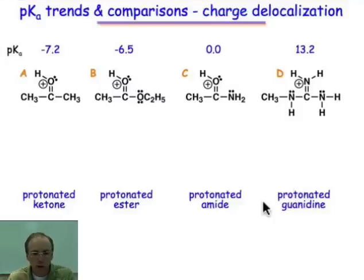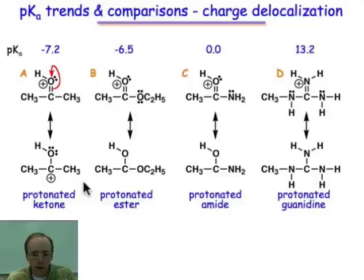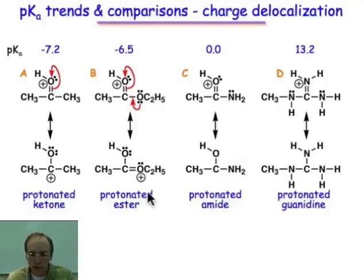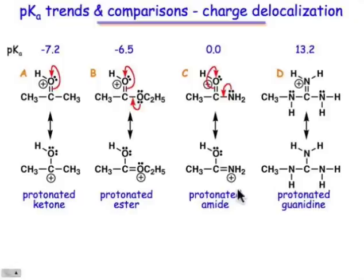We can draw the resonance contributor. The best resonance contributor we can come up with for the ketone makes a six-electron carbocation species — not a very good species — and that reflects the poor stability of the protonated ketone. In the case of the ester, we can spread that positive charge over two oxygen atoms. And in the case of the amide, we can spread that positive charge over one nitrogen atom and one oxygen atom.